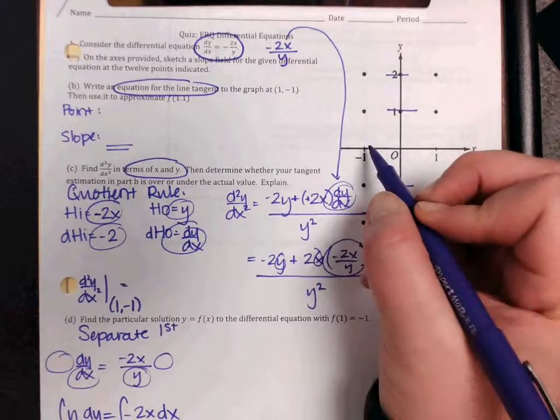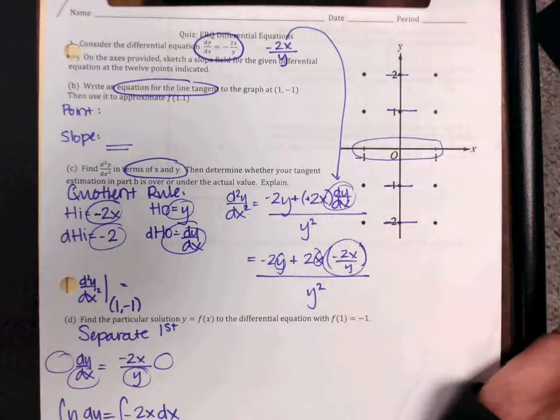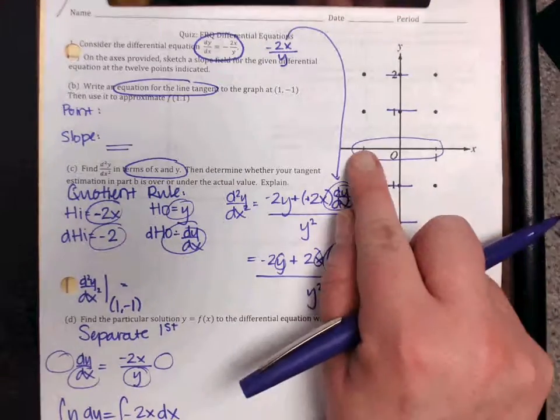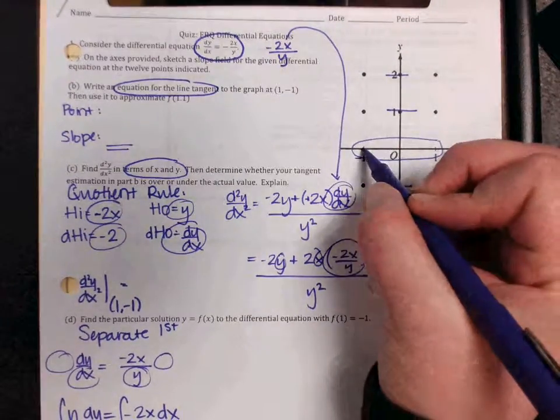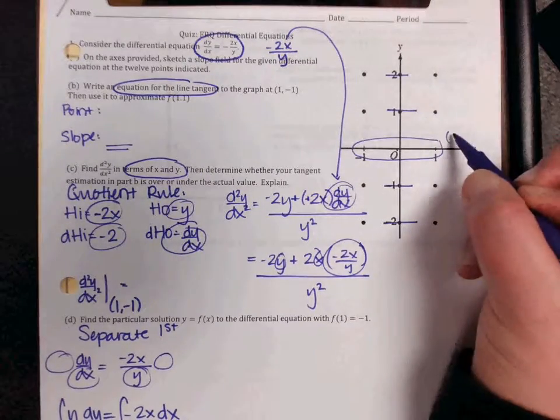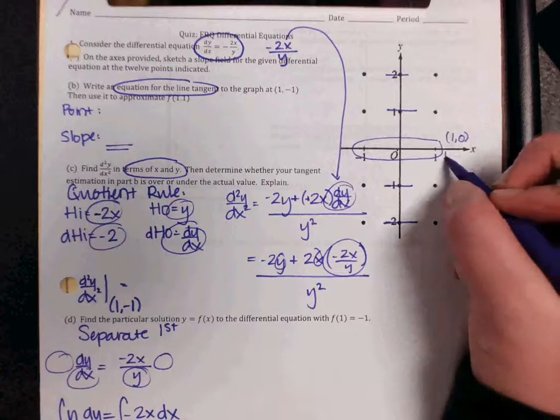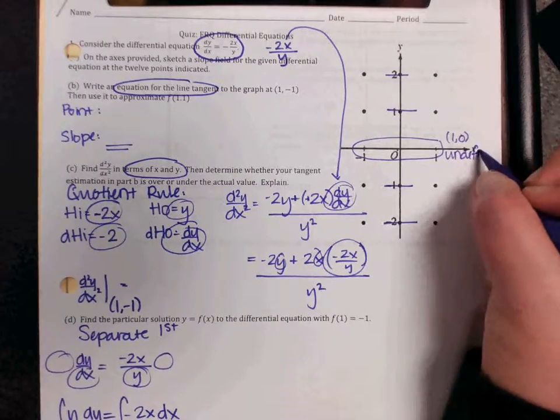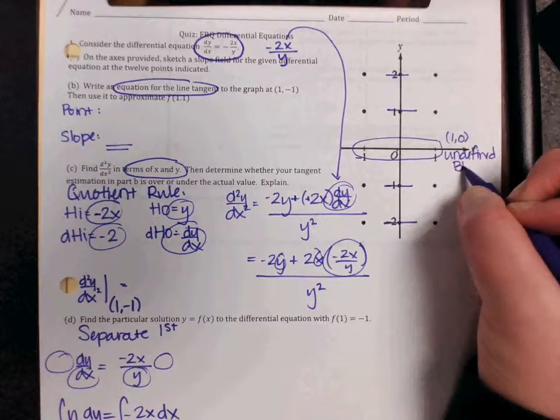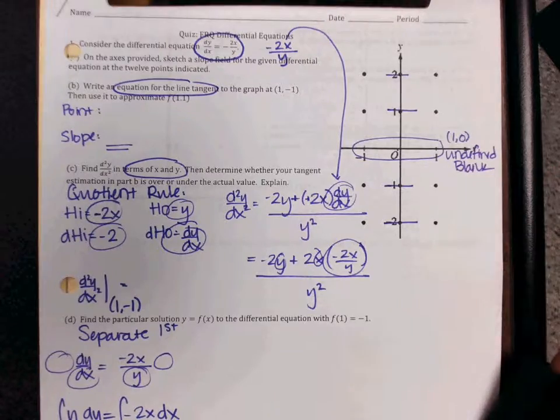And then you'll notice that here, there are no dots. These are left blank. The reason why is because if I plug in a point where my y value is 0, so for example, this is 1, 0, that's going to give me a divided by 0. Those are all undefined. And remember, for undefines, you leave them blank.